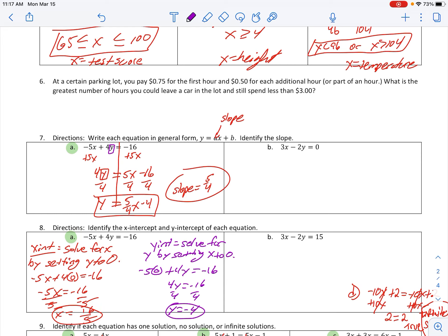So, we know we're going to have to pay $0.75 no matter what, and then $0.50 after that for each additional hour. And we want to spend less than $3. So, with that being said, X is going to represent the number of hours.